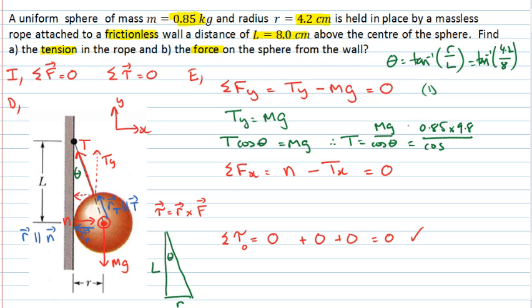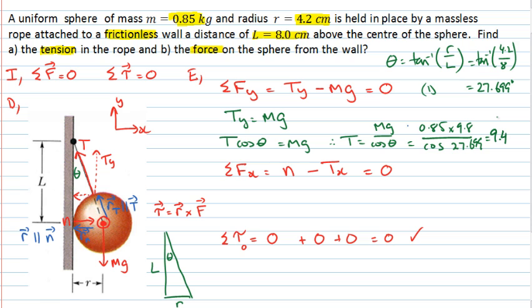Importantly, you don't have to convert any units here because the centimetres cancels with the centimetres. That ratio should be a unitless number. And if you use your calculator for that, you'll find that's 27.699 degrees. So using that angle, 27.699, that's 9.40 newtons. So we have solved for the tension in the rope for part A.